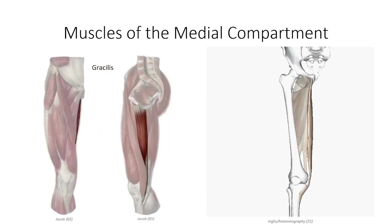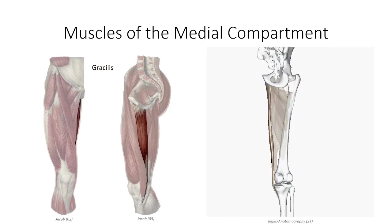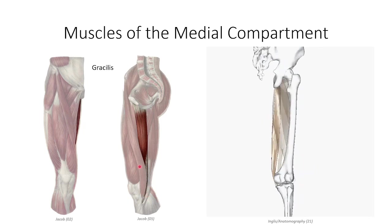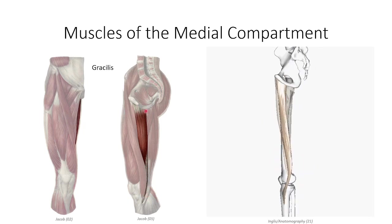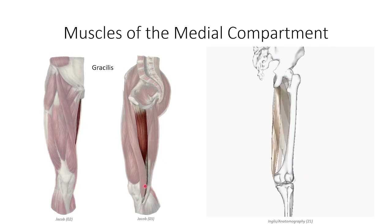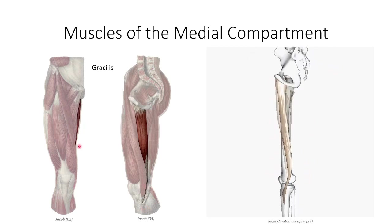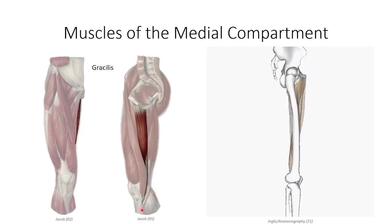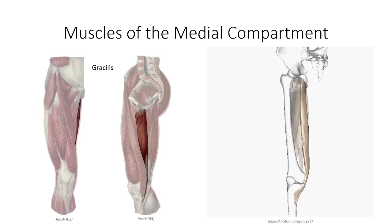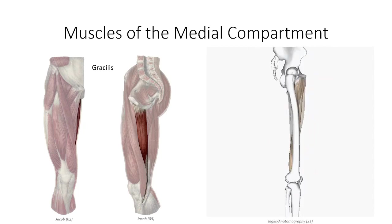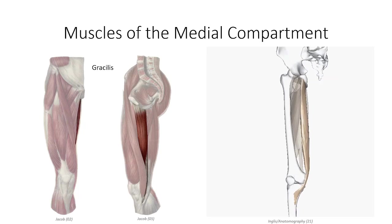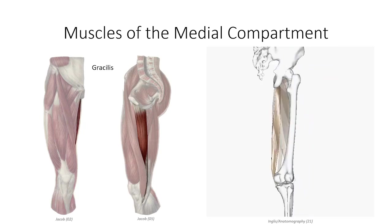The final muscle on the list is gracilis. The name is a Latin term for slender, which describes the thin appearance of this muscle. It arises off the anterior surface of the pubic body and projects inferiorly as the most medial of the medial compartment muscles. It passes posterior to the knee, then wraps anteriorly to insert on the tibia, just posterior to the sartorius. Its principal function is as an adductor of the hip, but as it also passes posterior to the knee joint, it serves as an accessory knee flexor.